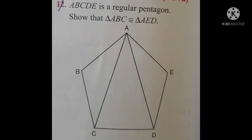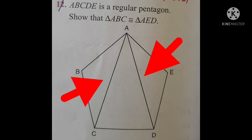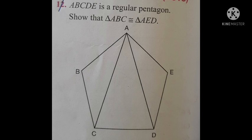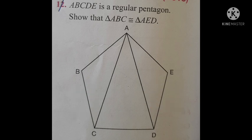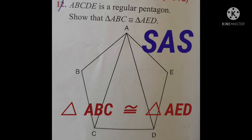Our last question is that ABCDE is a regular pentagon, such that triangle ABC is congruent to triangle AED. Since ABCDE is a regular pentagon, all sides and all angles are equal. In triangle ABC and in triangle AED, AB equal to AE — sides of a regular pentagon. Angle ABC is equal to angle AED — angles of a regular pentagon. BC equal to ED — sides of a regular pentagon. So as per the criteria of SAS, triangle ABC is congruent to triangle AED.